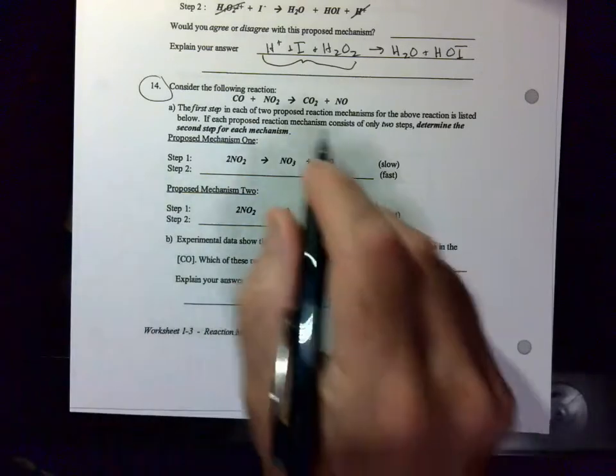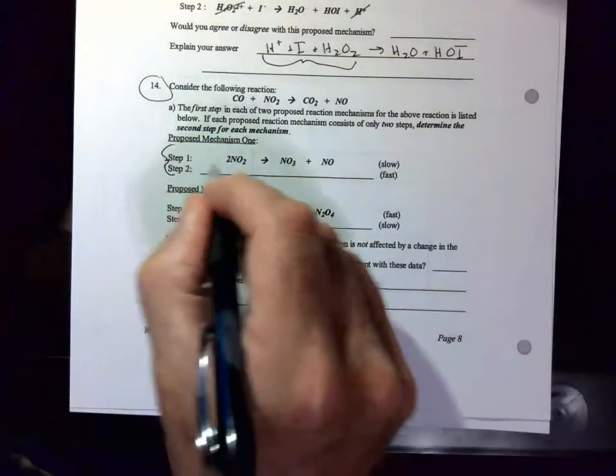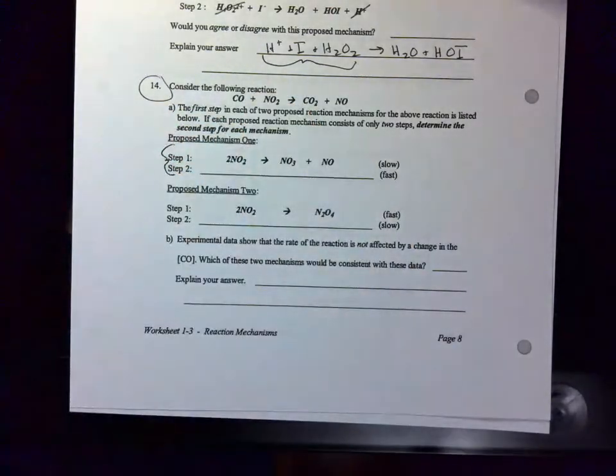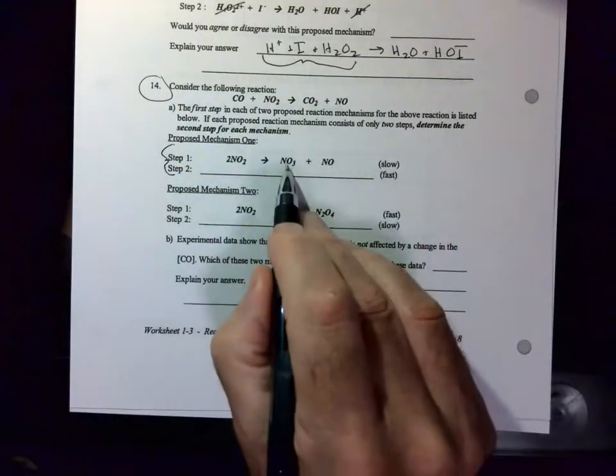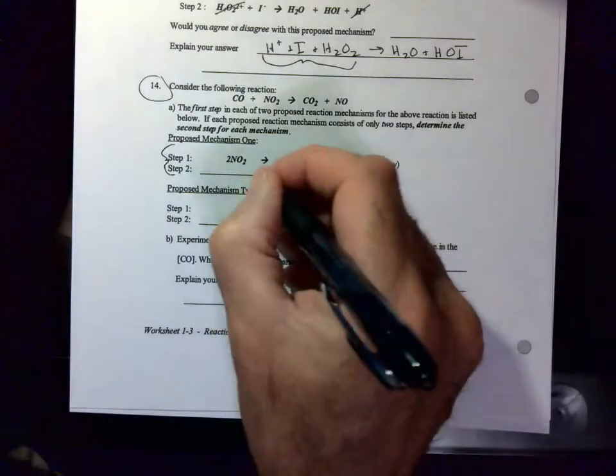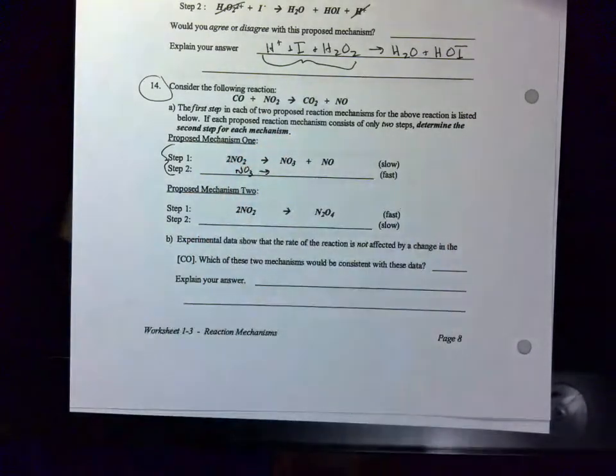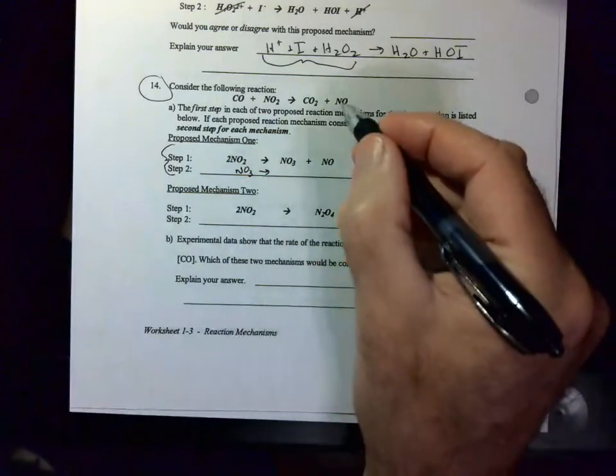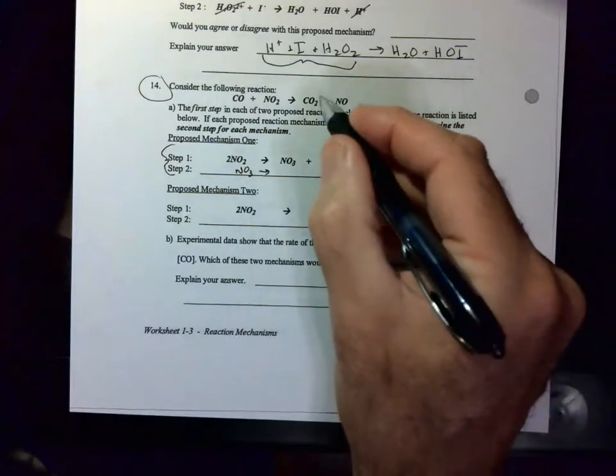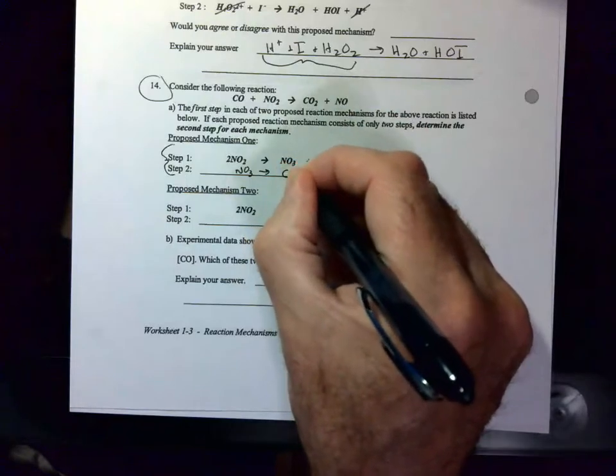So what you're trying to do is come up with proposed reaction mechanisms that will work. So to do that, you take a look at the overall reaction and you try and come up with two reactions that are going to add up to this overall. So for example, I don't see an NO3 up here, so I'm going to have to get rid of that NO3. So I'm going to have to have an NO3 on this side so they cross out. I have an NO here, an NO here, CO2, so I'm going to need a CO2 on this side.